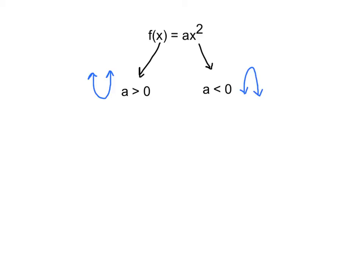If a — the constant in front of x squared — is greater than 0, the parabola will open up. If a is less than 0, it will open down. There's a trick: if it's negative, you're sad, so it's like an unhappy face opening downward.